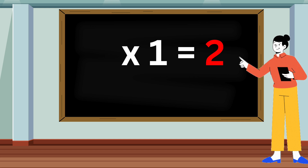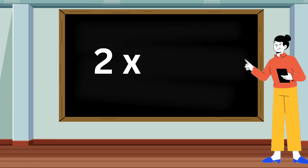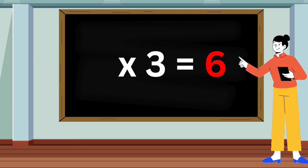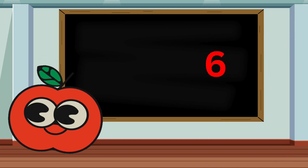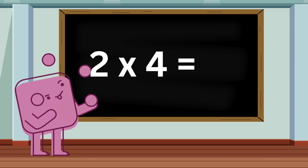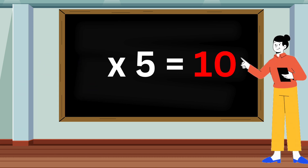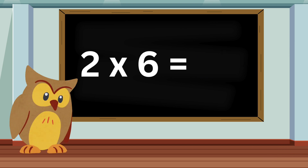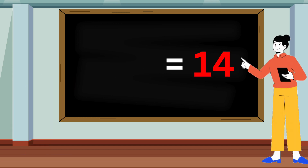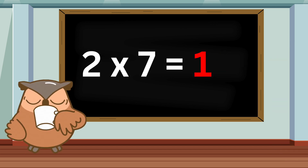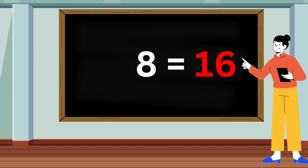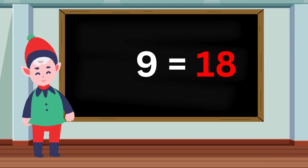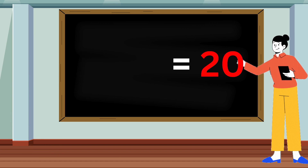Two ones are two. Two twos are four. Two threes are six. Two fours are eight. Two fives are ten. Two sixes are twelve. Two sevens are fourteen. Two eights are sixteen. Two nines are eighteen. Two tens are twenty.